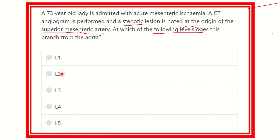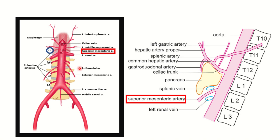These two pictures are enough to understand the concept. This is the abdominal aorta — it arises from the aortic opening of the diaphragm at the level of the thoracic 12 vertebra. We can see the anterior branches of the abdominal aorta. One of them is the superior mesenteric artery, which is an anterior branch of the abdominal aorta.